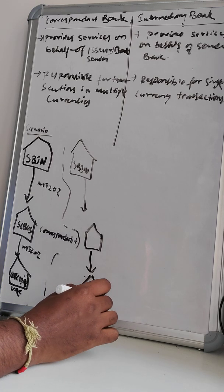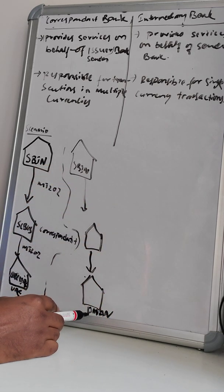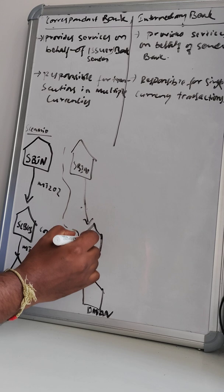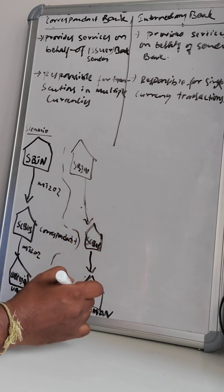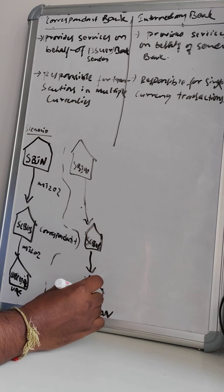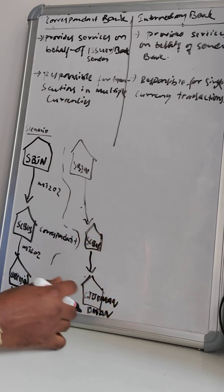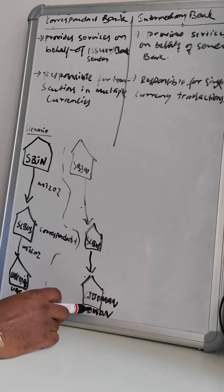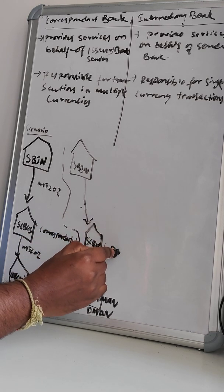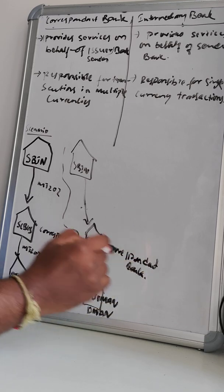Now let's say SBI India wants to transfer a fund to another bank in Oman. SBI India doesn't have an accounting relationship in Oman, so they will select one bank that has that relationship. In this case, SAB US also has a relationship in Oman with City Oman Bank. Since SBI India already has a relationship with SAB US, SAB US will again act as the correspondent bank.